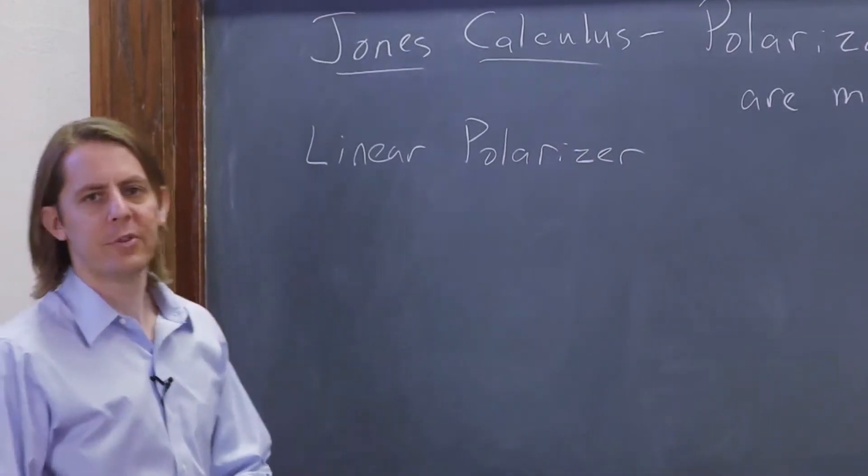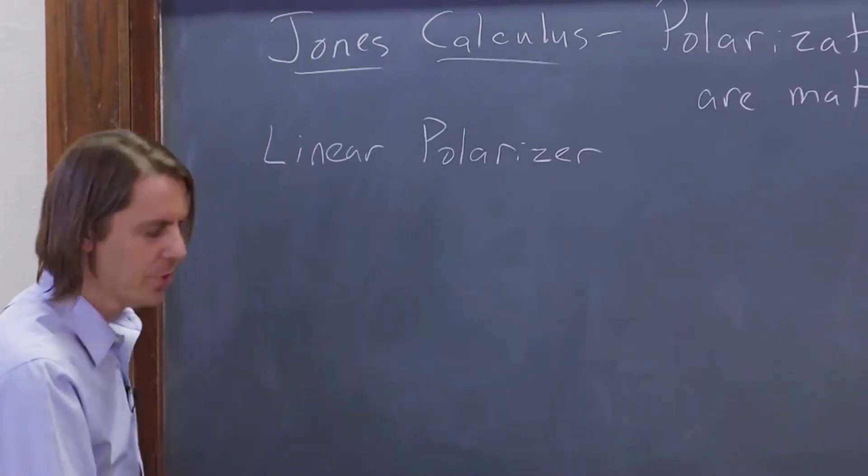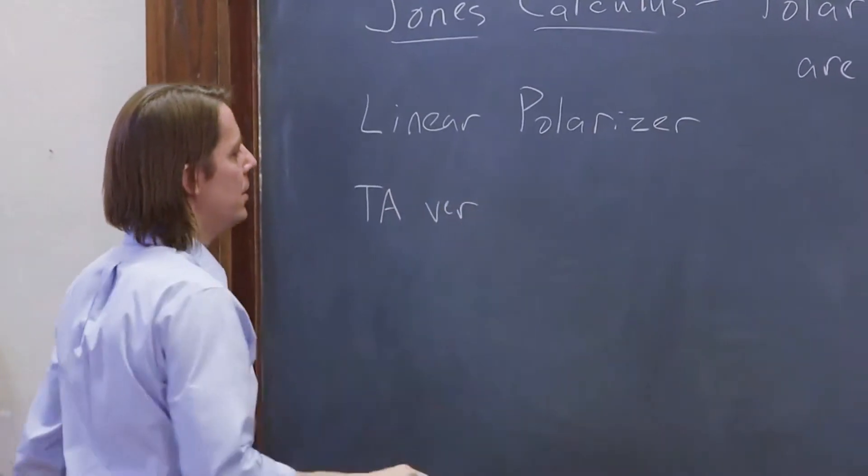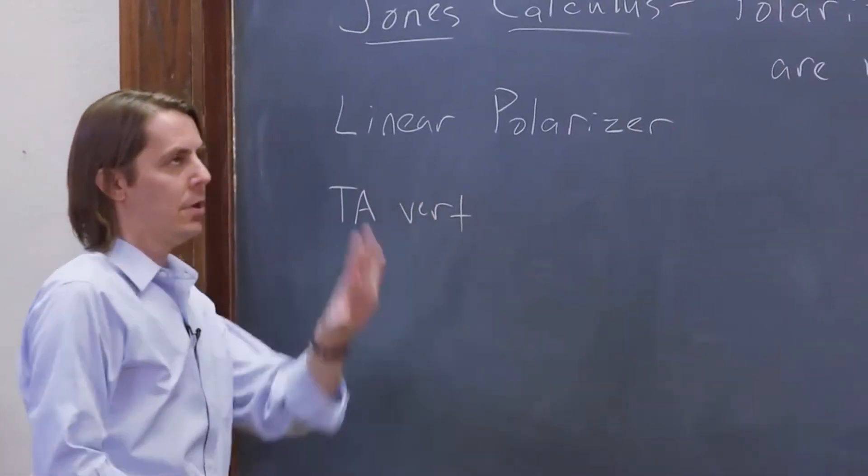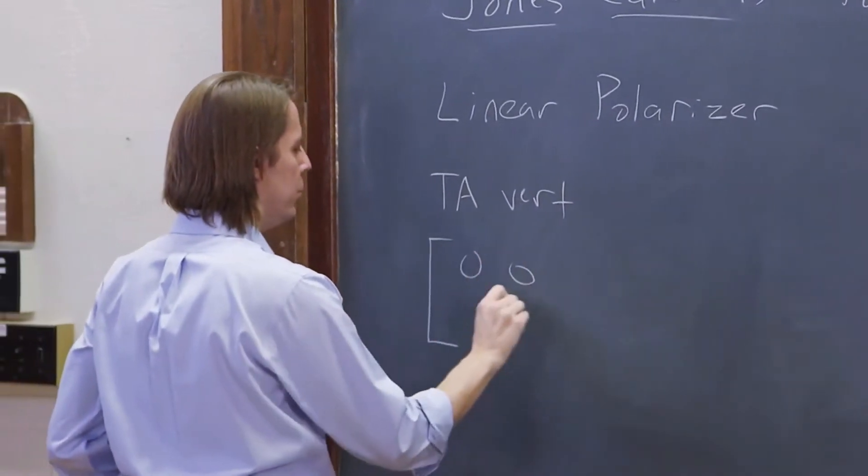The matrix that describes the polarizer depends on which way the polarizer is oriented. If the TA is vertical, that would be the matrix 0, 0, 0, 1.